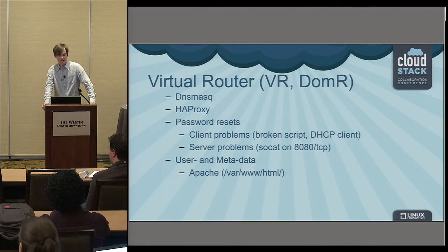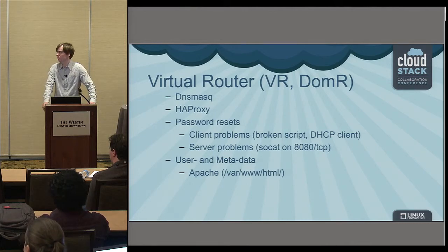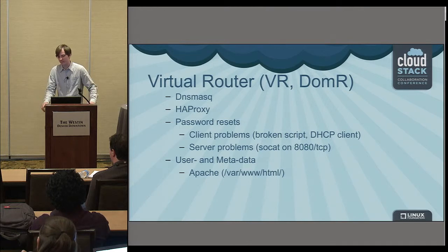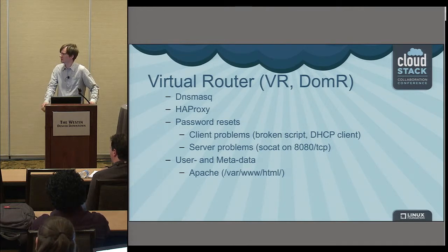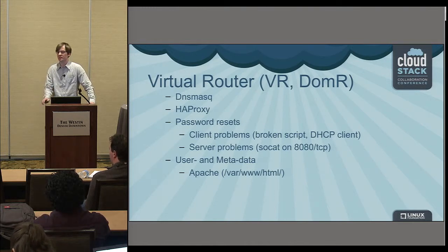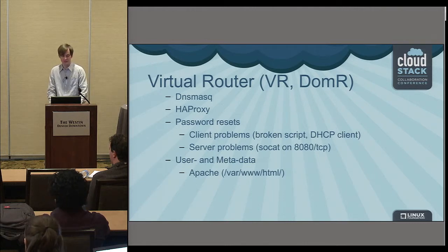The virtual router also provides user and instance metadata via an Apache web server running at the standard path. If your VMs are not getting metadata, log in and make sure it exists. Usually with any of these virtual router problems, you can stop and start the virtual router, or destroy and recreate it, or restart the network, and that will solve it.